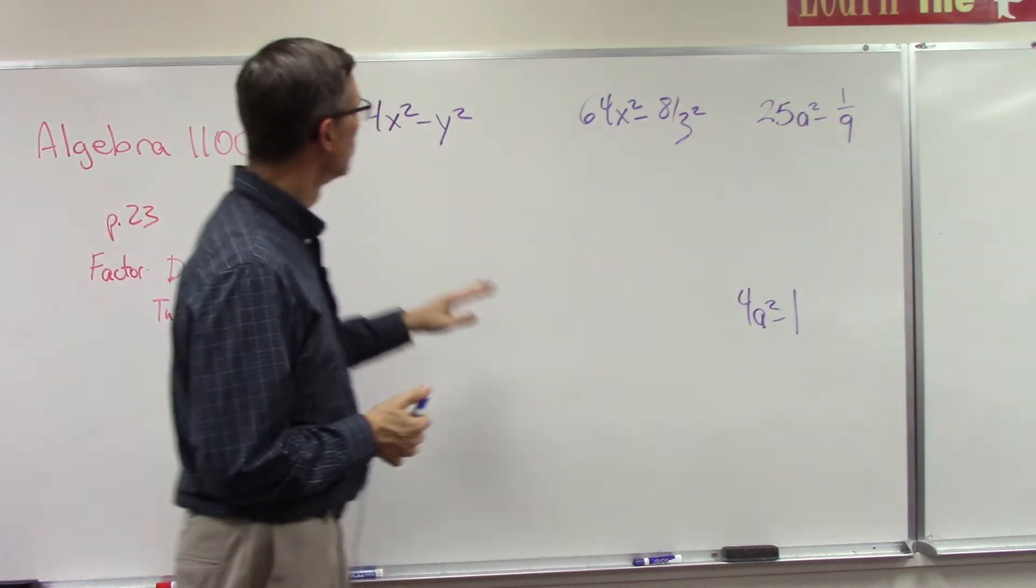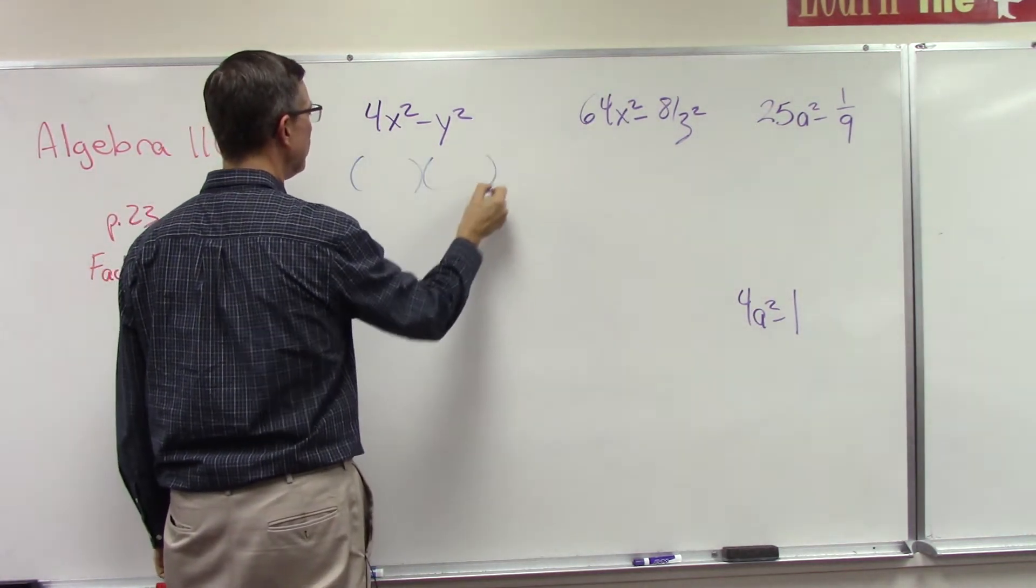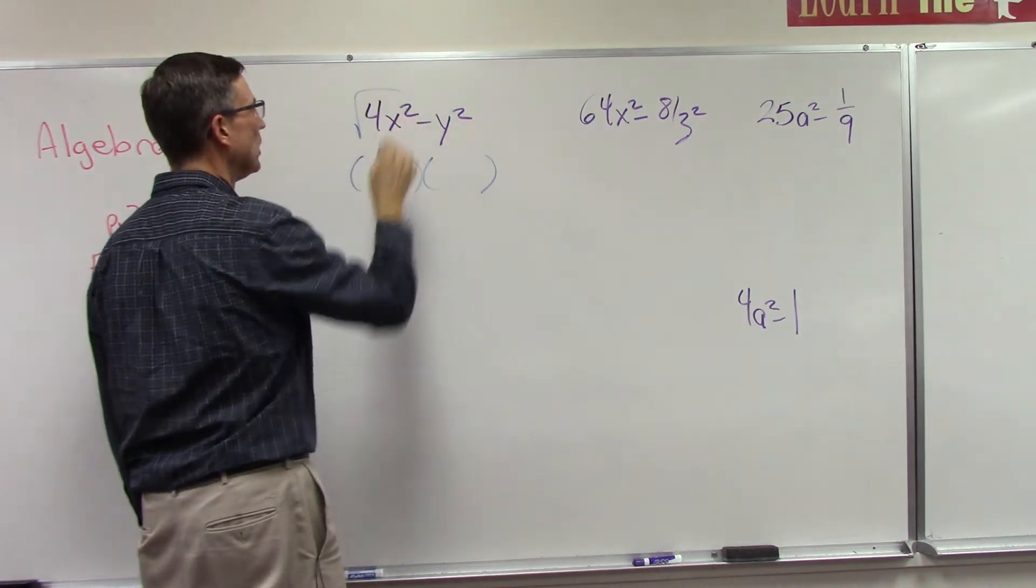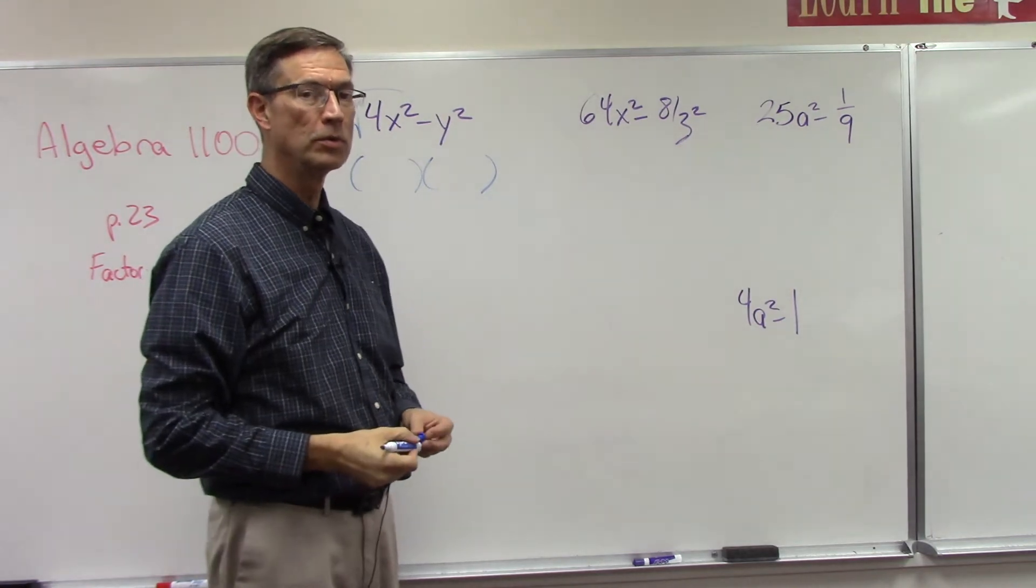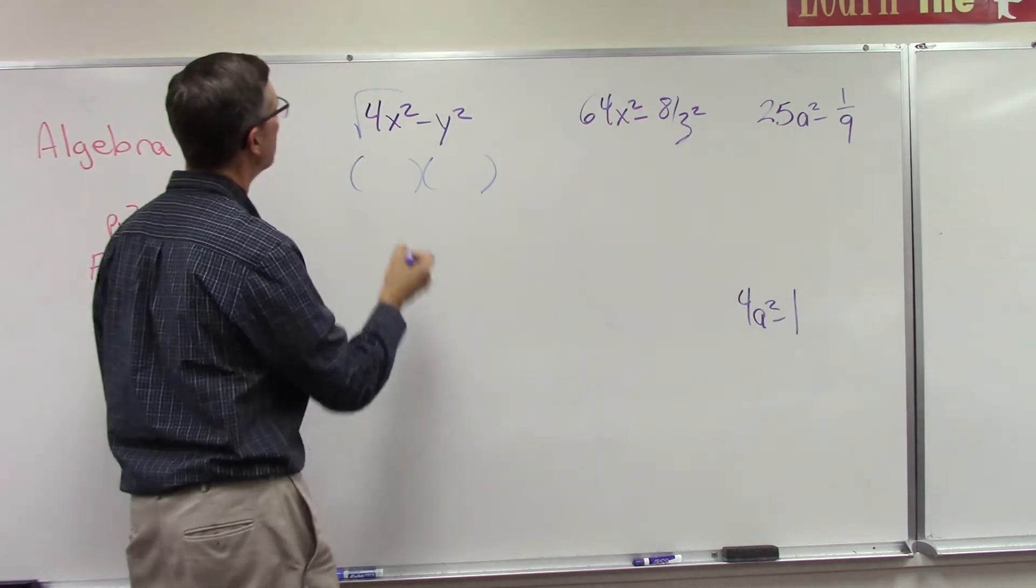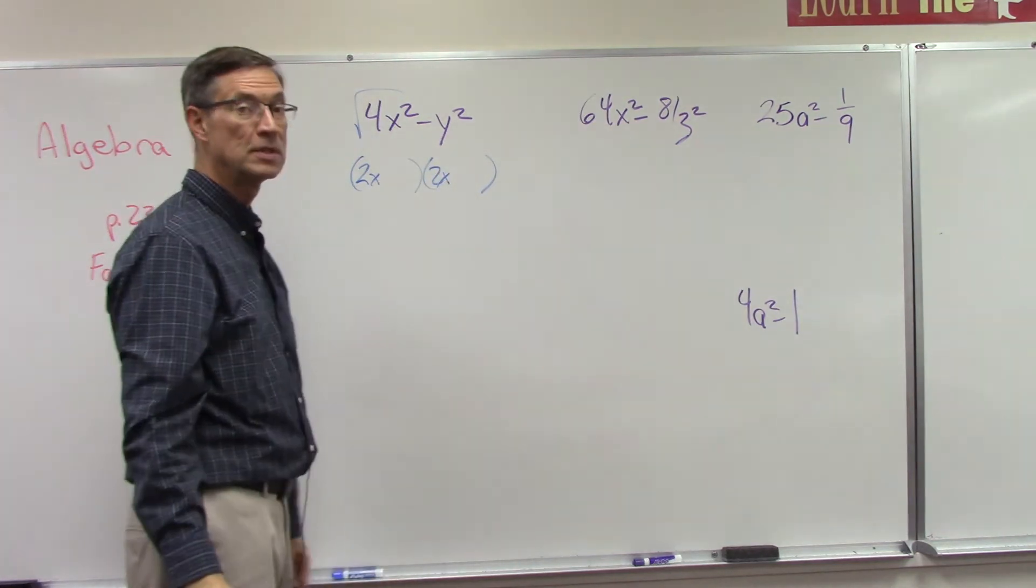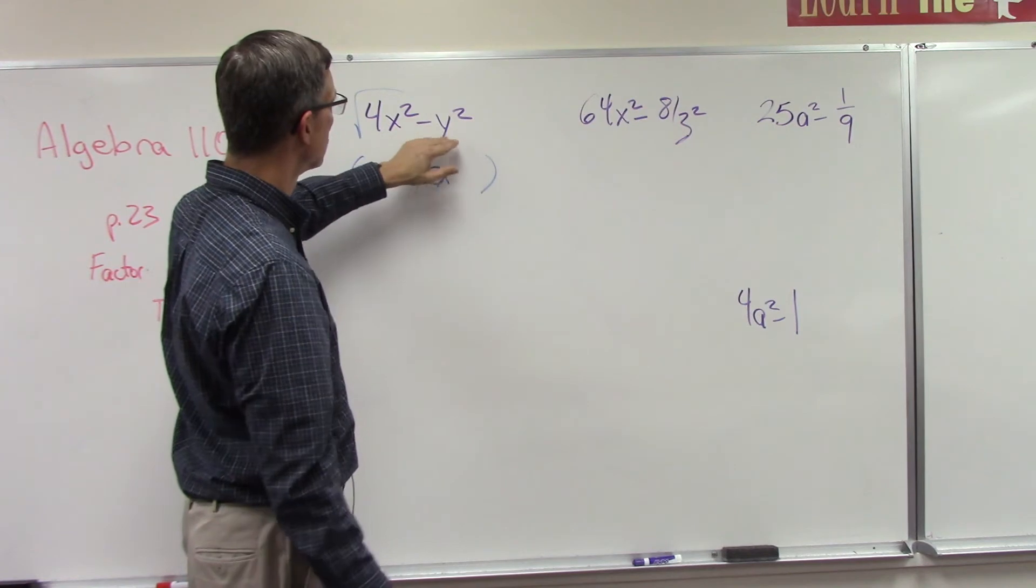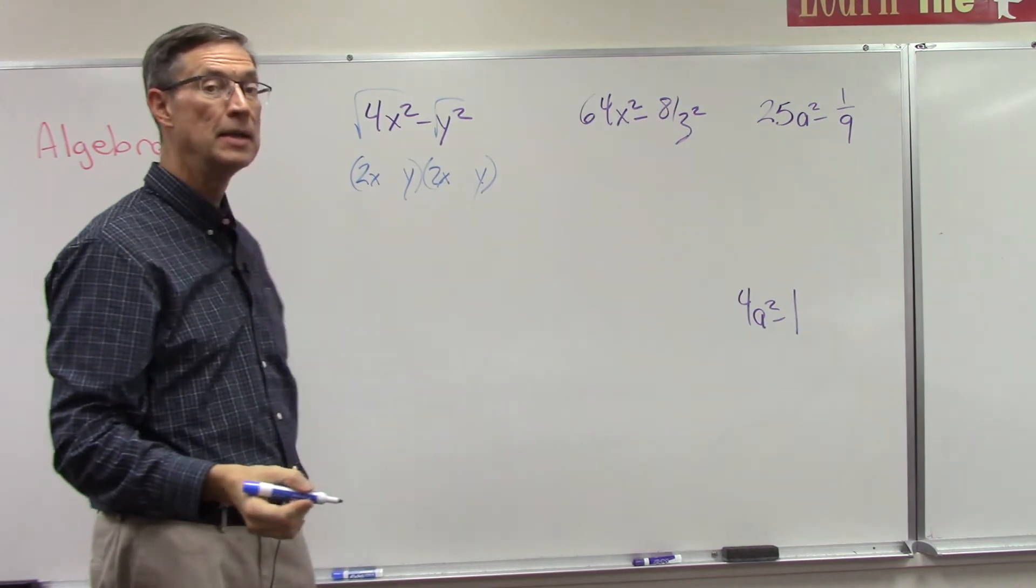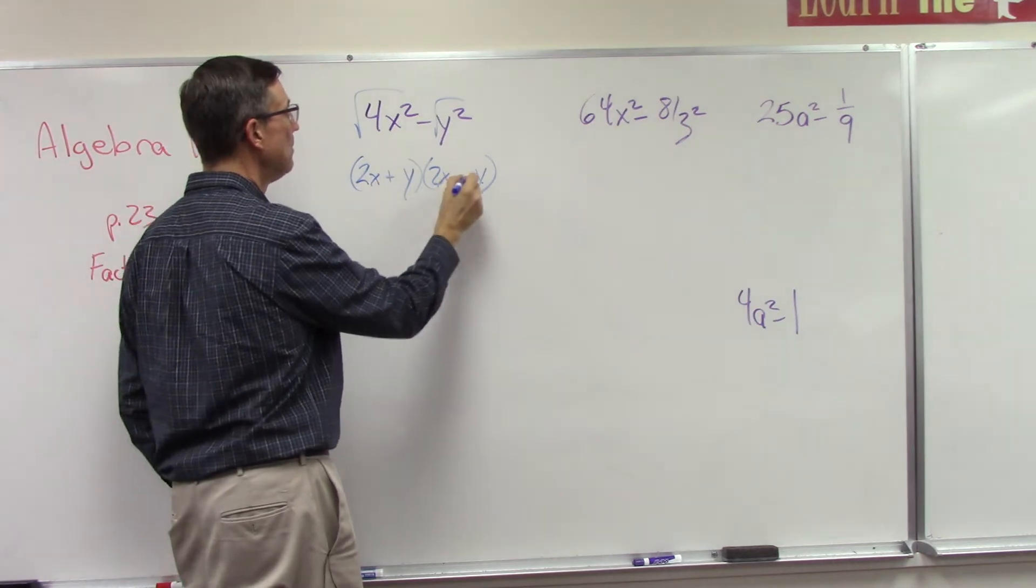So let's walk through the steps here. We basically want to end up with two parentheses. What is the square root of 4x²? What times itself equals 4x²? Well, 2 times 2 is 4, and obviously x times x is x², so I'm going to put 2x in the front here, 2x in the front of the second parentheses. This one's easy: the square root of y² is just y.